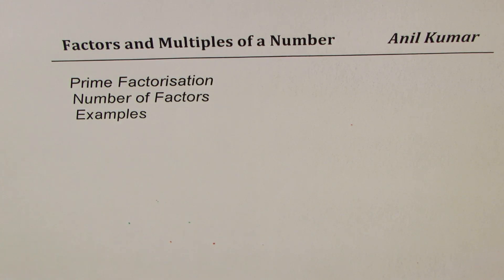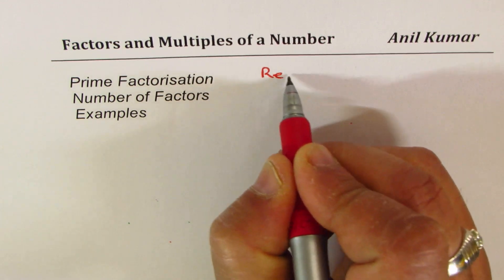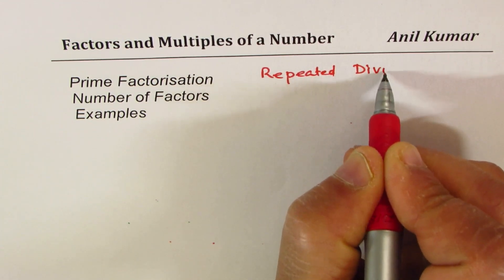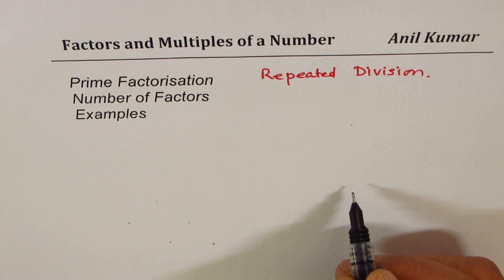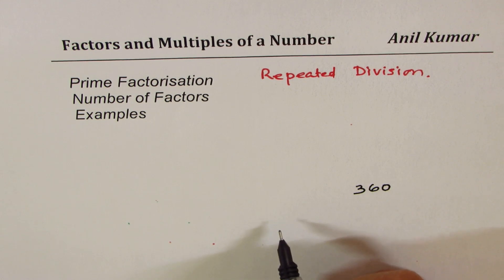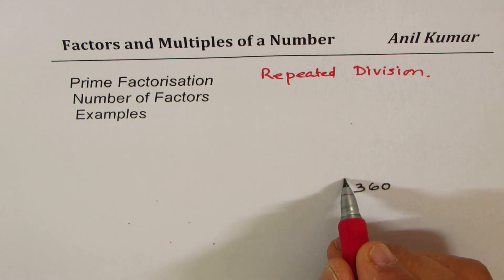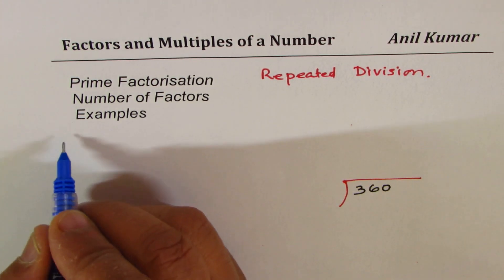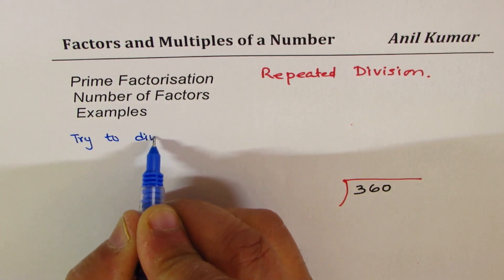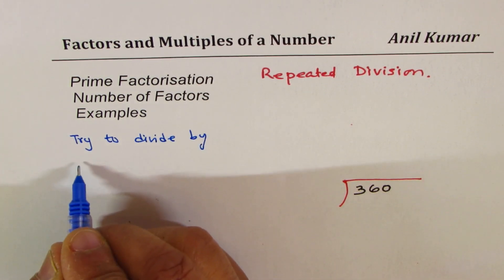Let's take a few more examples. We'll do prime factorization of a smaller number using the method of repeated division. In repeated division, it's a special type of division. I'm taking the example of the number 360. We'll divide 360 repeatedly. In this method, we should try to divide by prime numbers — divisibility rules should be known to you.